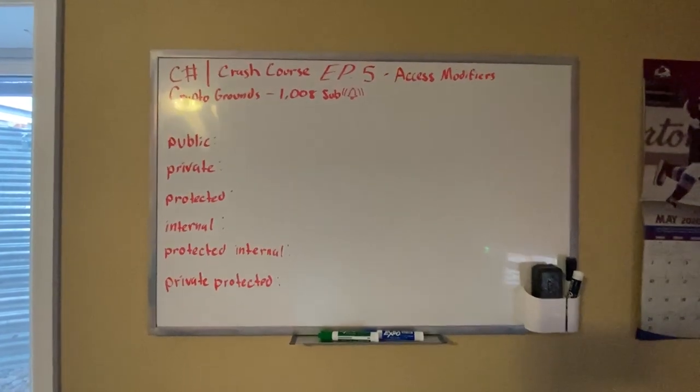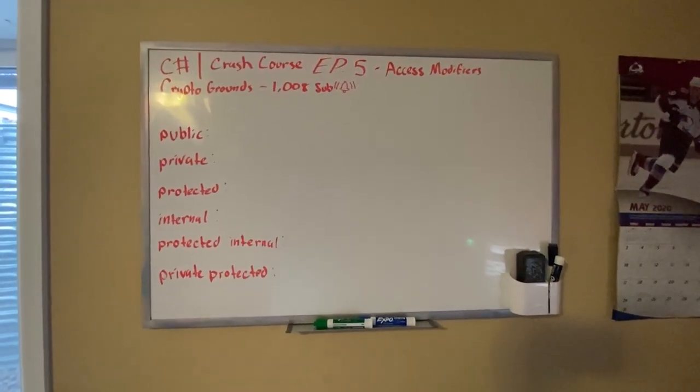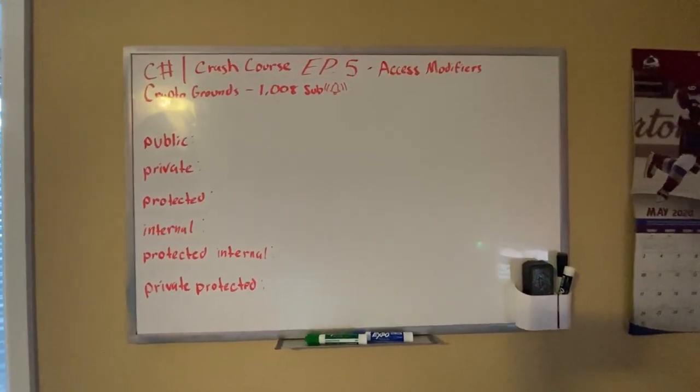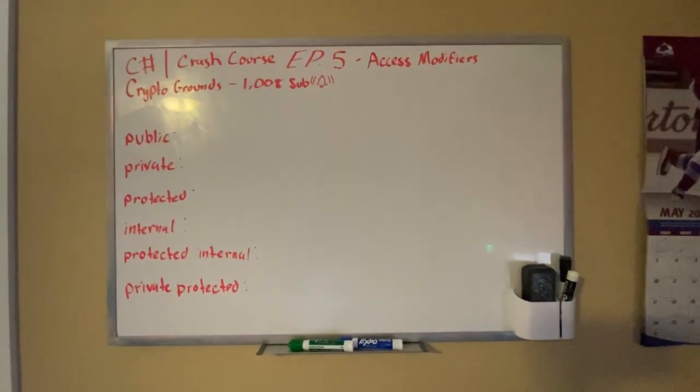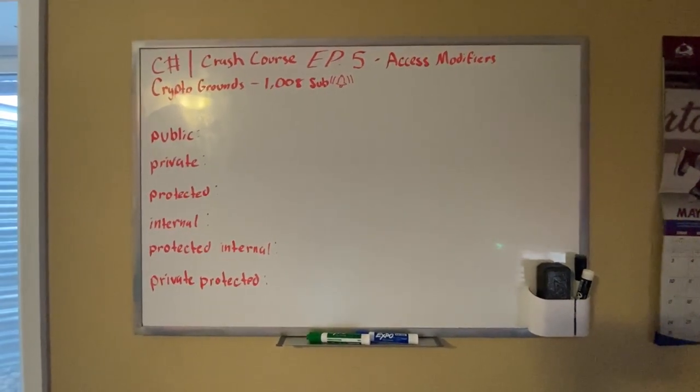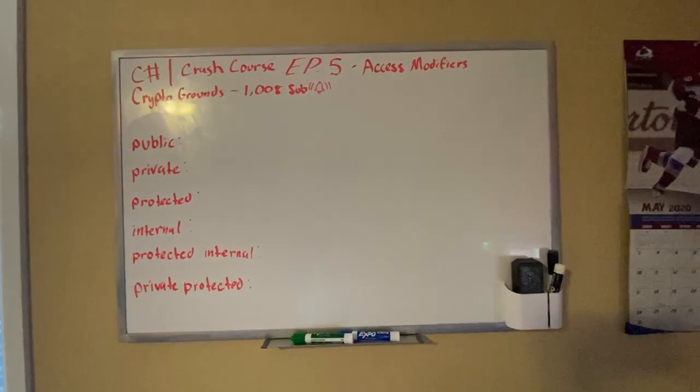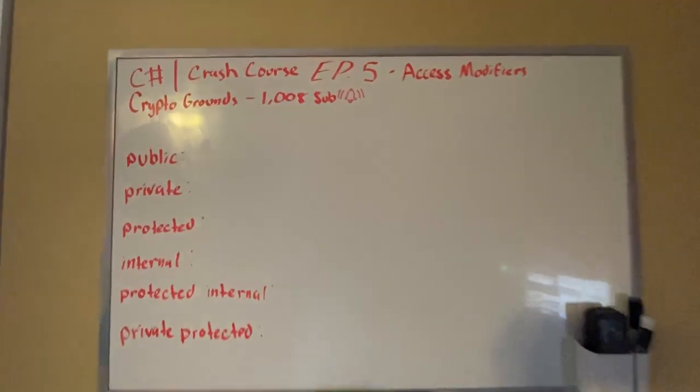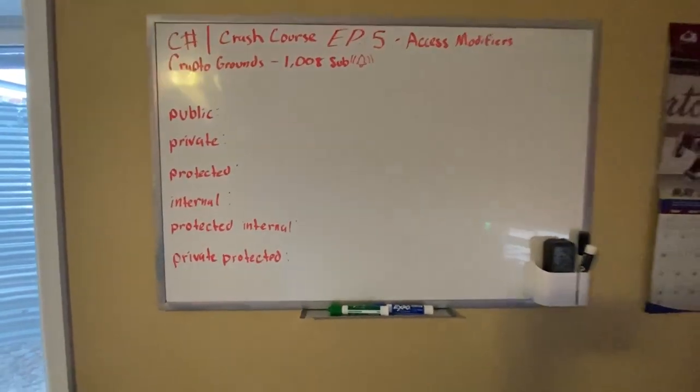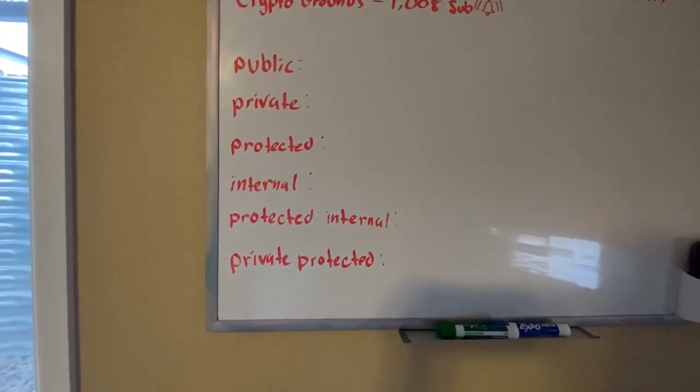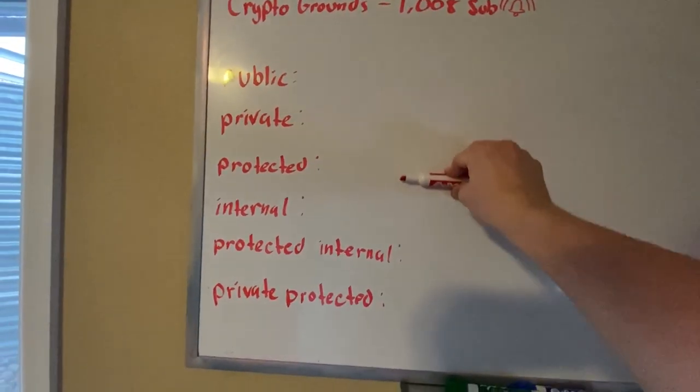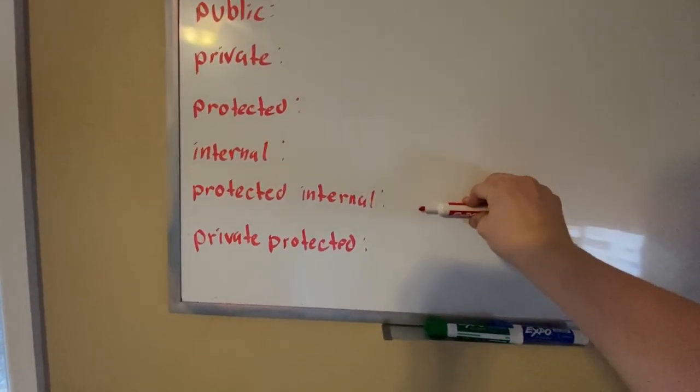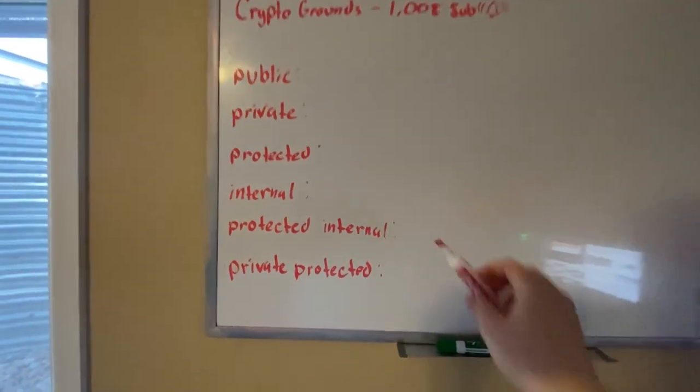Just a heads up. Hello guys, Crypto Grounds here. Welcome back to another C# crash course video. Today we're going to be doing access modifiers. If you enjoy this video, make sure you leave a like and drop a comment below. Don't forget to subscribe and turn on notifications. Let's get on with it. Here we have our access modifiers: public, private, protected, internal, protected internal, and private protected.